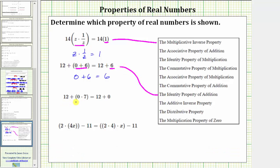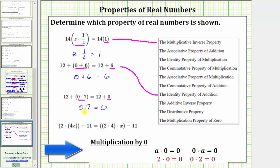Next, we have 12 plus the quantity zero times seven equals 12 plus zero. Notice in this equation, the zero times seven on the left has been simplified to zero on the right. We need to determine what property is shown by zero times seven equals zero. Whenever we have a product involving zero, we know the product will always be zero. This is due to the multiplication property of zero, which is the last property given.